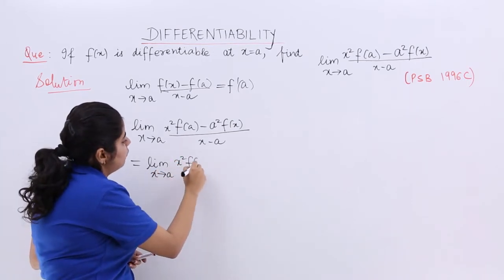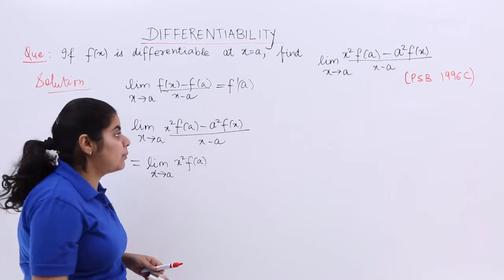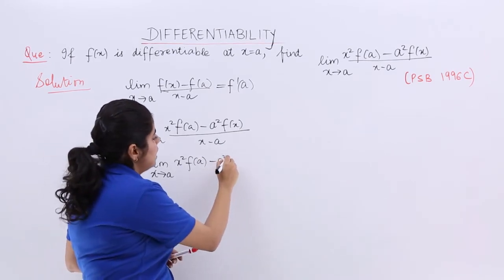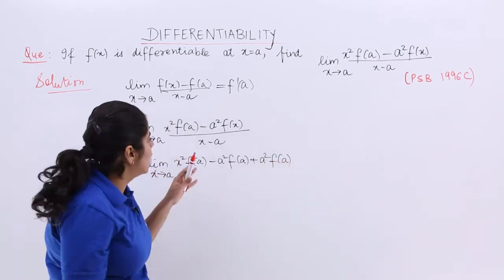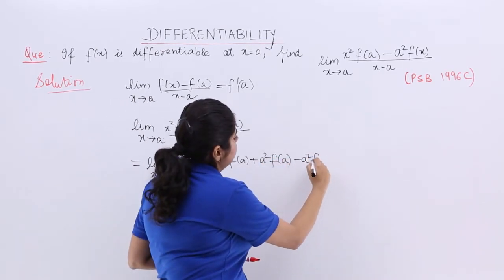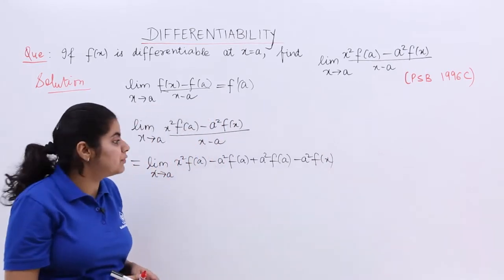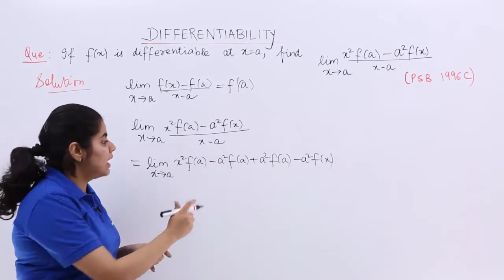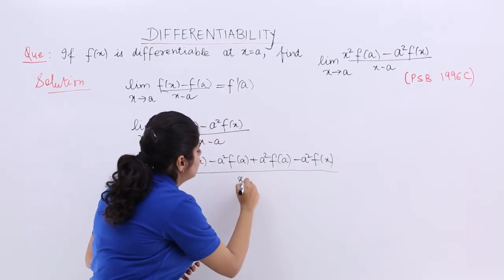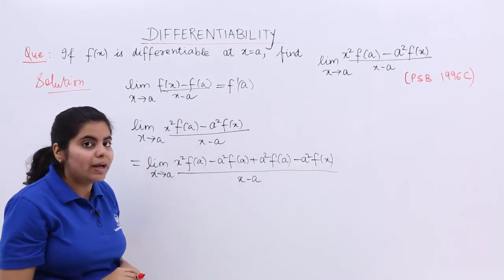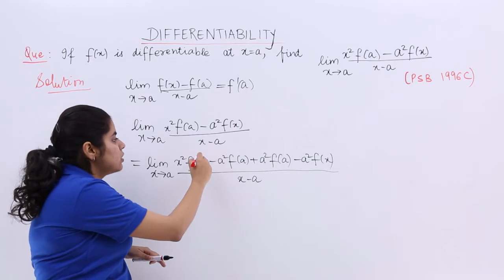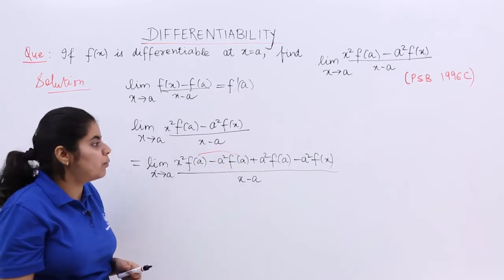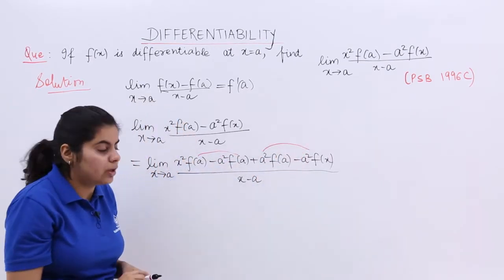Let's make some manipulation. It is x²f(a). Let's add and subtract a²f(a). What will happen? We will see. This is the only thing that I have done. a²f(a) has been added and subtracted. Denominator does not change. Now why we did this? We saw that this thing can be taken out as common - f(a) from here and a² from here.